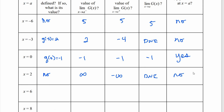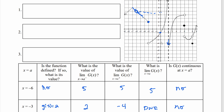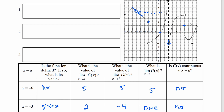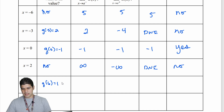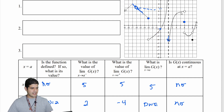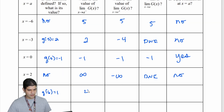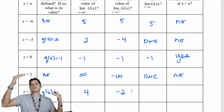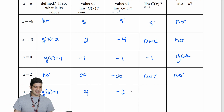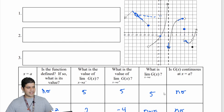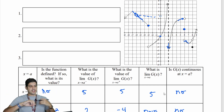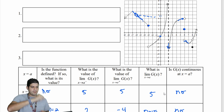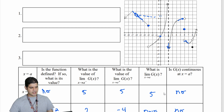Now let's look at x equal to 6. The function is defined and g of 6 equals 1. Looking at the limits: from the left side at 6 I'm going up to 4, and from the right side it's negative 2. Since those limits aren't matching up, the limit does not exist. We have a jump discontinuity — the function jumps from 4 down to 1 and then to negative 2. It is not continuous.